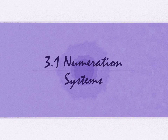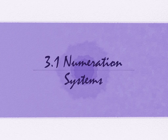All right, section 3.1, we started last time — numeration systems — and we talked about three different historically significant numeration systems. So somebody tell me one of them that you remember. Okay, I heard Mayan, Babylonian, and Egyptian. So those are the three we talked about last time, and we have one more system we're going to talk about today. This is one we still see in use today in different fashions, and that's the Roman numeration system.